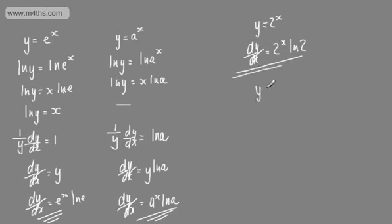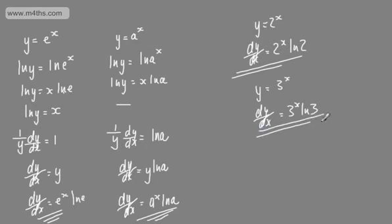If y is equal to 3 to the x, where a is the positive constant 3, then we can say that dy by dx will be equal to 3 to the x times the natural log of 3. It's nice and logical and nice and straightforward.